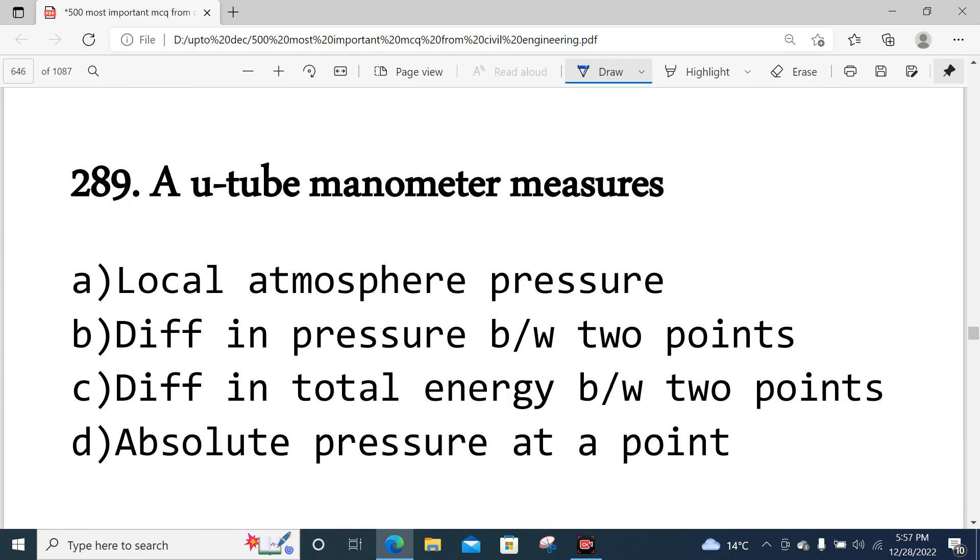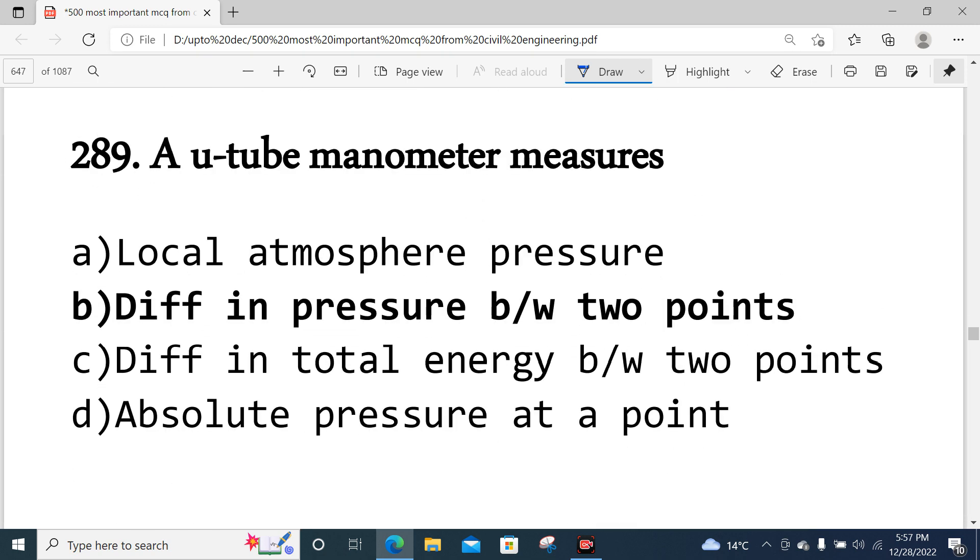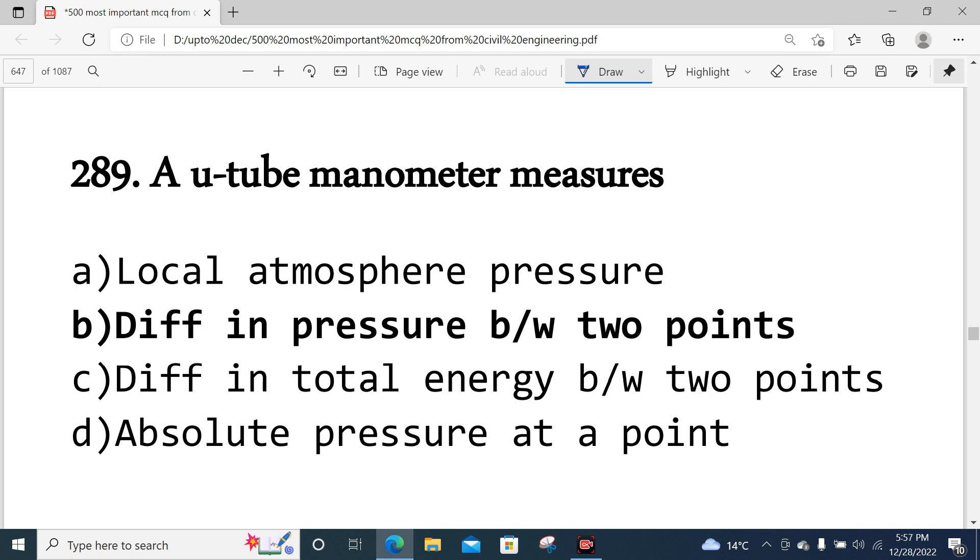Question number 289: A U-tube manometer measures basically the difference between pressures. The pressure difference. Option B is correct.